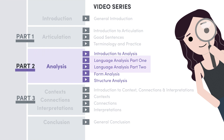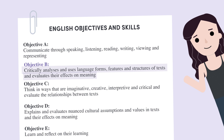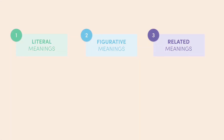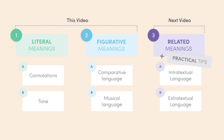Simply put, we'll be spending these two videos looking at the ways in which language can shape meaning. I've devised a way of splitting the different ways in which language shapes meaning into three separate levels, each of which has two parts to consider. In this video we'll cover literal meanings and figurative meanings, and then in the next video we'll cover related meanings before concluding with some practical tips.